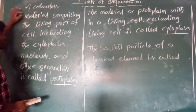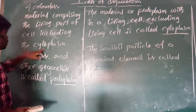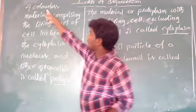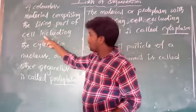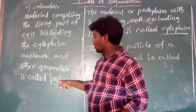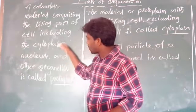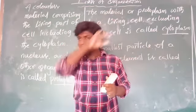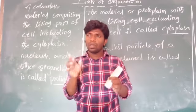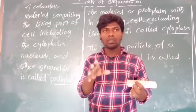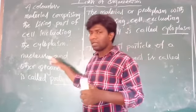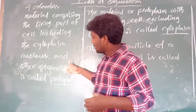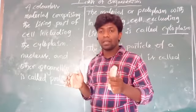A colorless material comprising the living part of a cell, including cytoplasm, nucleus, and other organelles, is called protoplasm. All these cell organelles — nucleus, vacuoles, lysosomes, ribosomes, Golgi apparatus — are present in the cell. The cell contains a fluid-like substance, which is the cytoplasm. So protoplasm is this colorless material that makes up the living part of the cell.